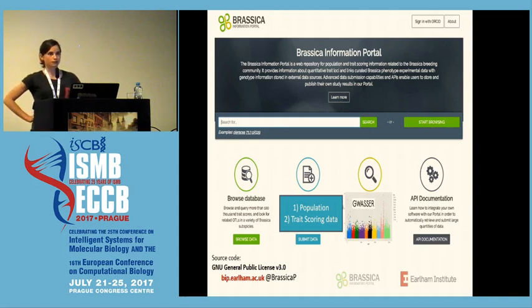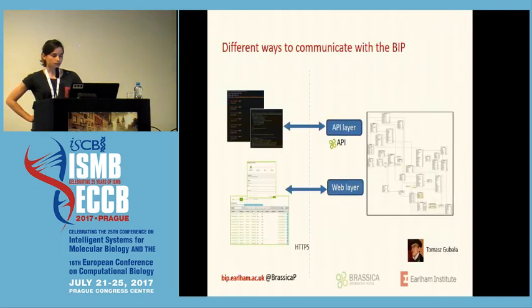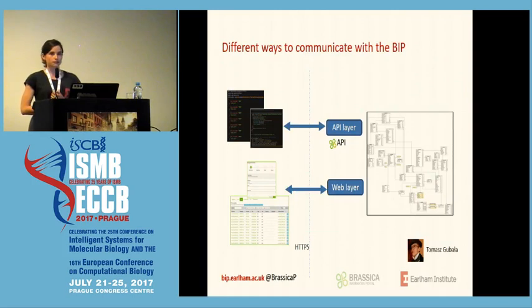In the future, we want to pull in some data from external resources. If you want to automate submission or do some more complex queries, you can also use the API for that. The Brassica Information Portal schema is based on the CropStoreDB schema, and you can interact with it in two ways: one is through the web portal and one is through the RESTful API, the BIP API.